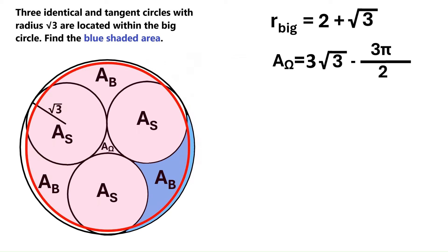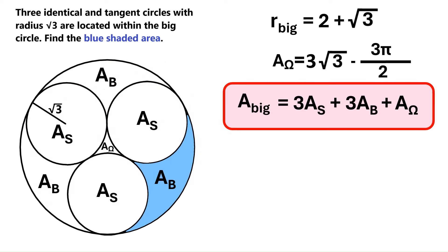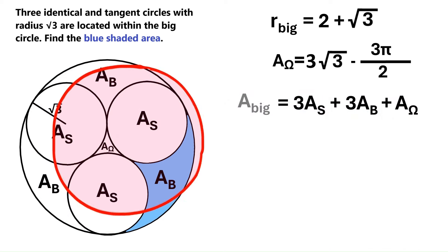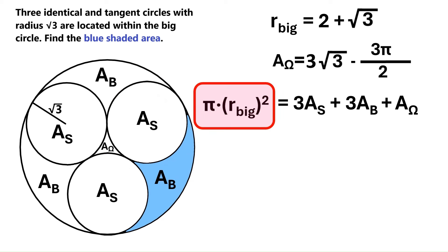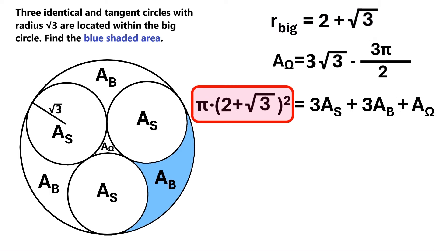Now, all of these regions added together equals the area of this entire circle, and we can put that as an equation. This area big stands for the area of the big circle, so we can express it as pi times r squared. And we know the radius for the big circle is 2 plus radical 3, so let's substitute that value here. And we get this.